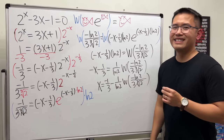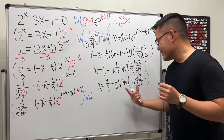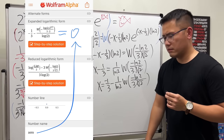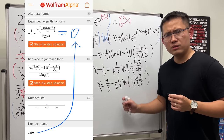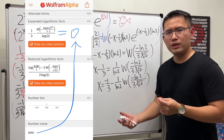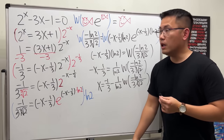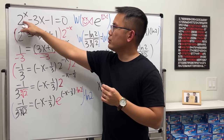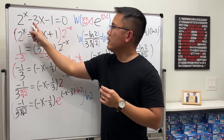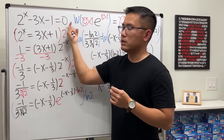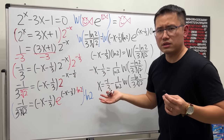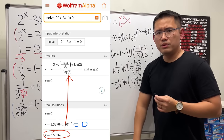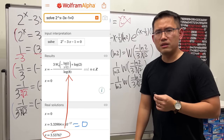We're done! Let's enter this into Wolfram Alpha. We get x = 0. By the way, 0 is indeed a solution: 2^0 = 1 and 3(0) + 1 = 1, so it checks out. But what happened to the other answer around 3-point-something?